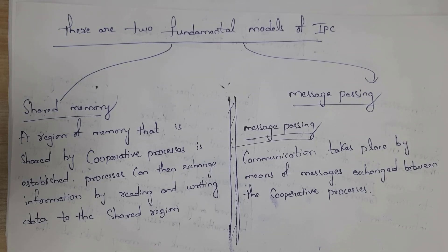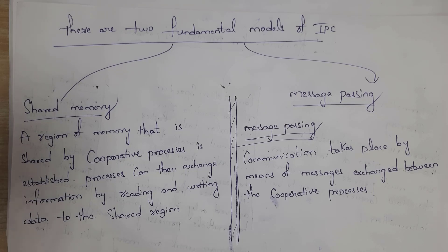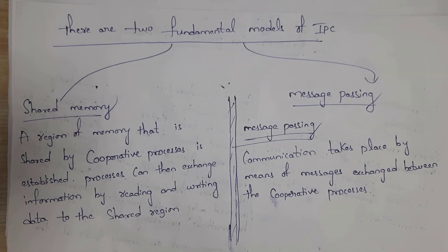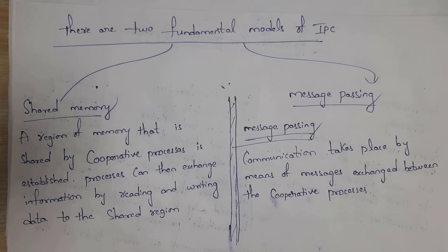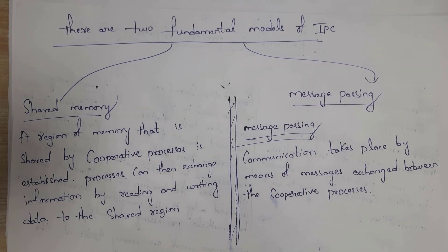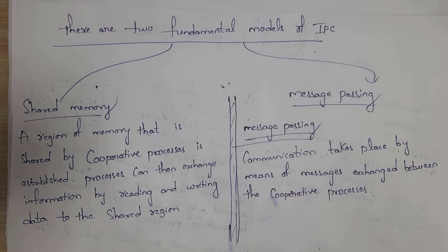There are two fundamental models of inter-process communication. The first one is shared memory, and the next one is message passing. Shared memory means a region of memory is shared by cooperative processes in order to exchange information. Message passing means communication is established by messages exchanged between cooperative processes. These are the two fundamental models of inter-process communication.